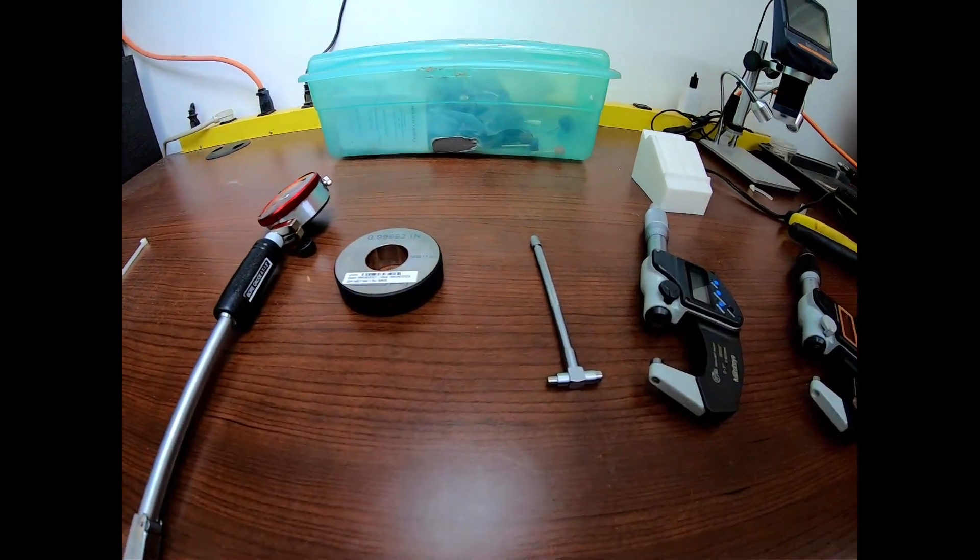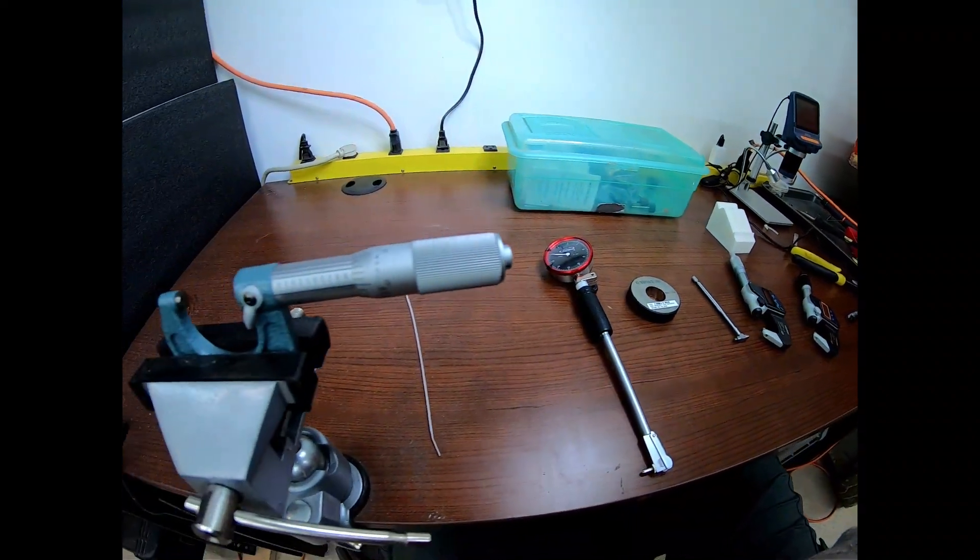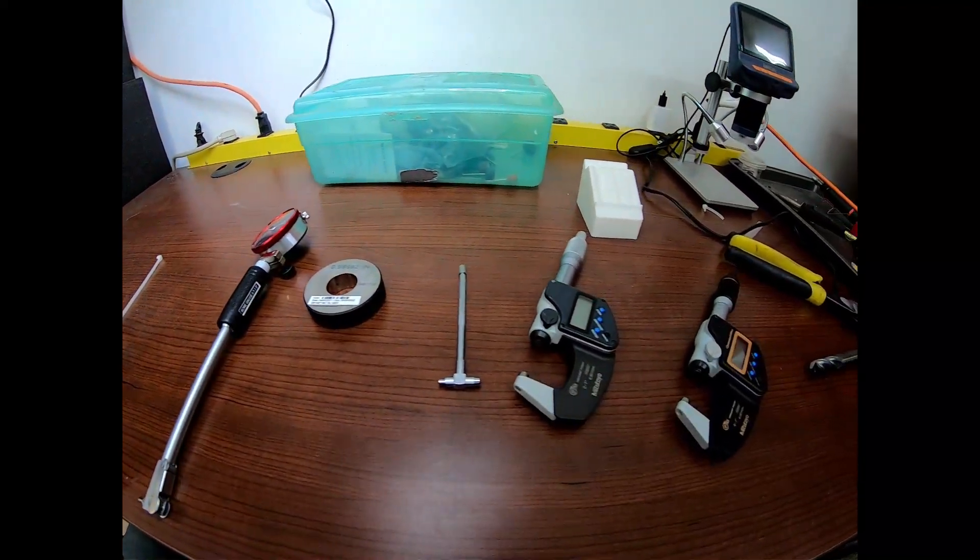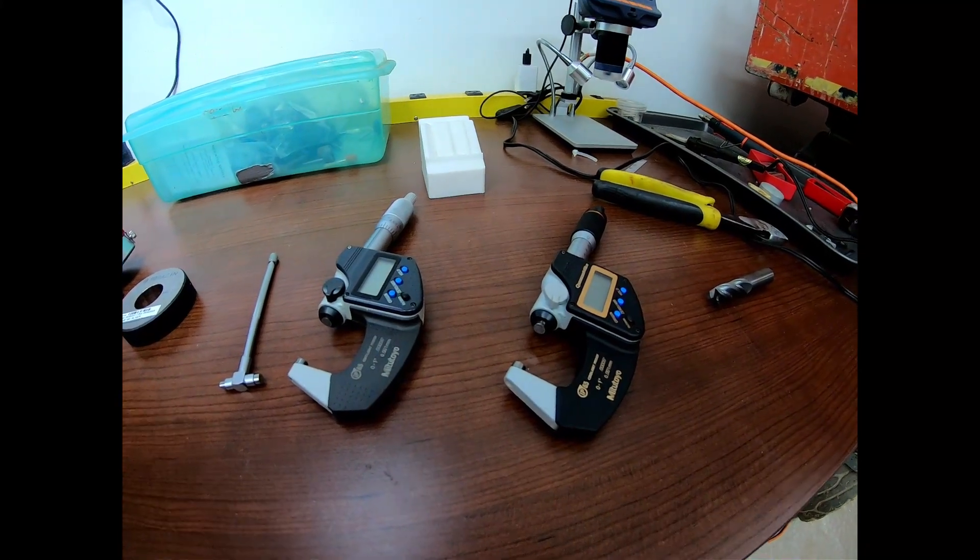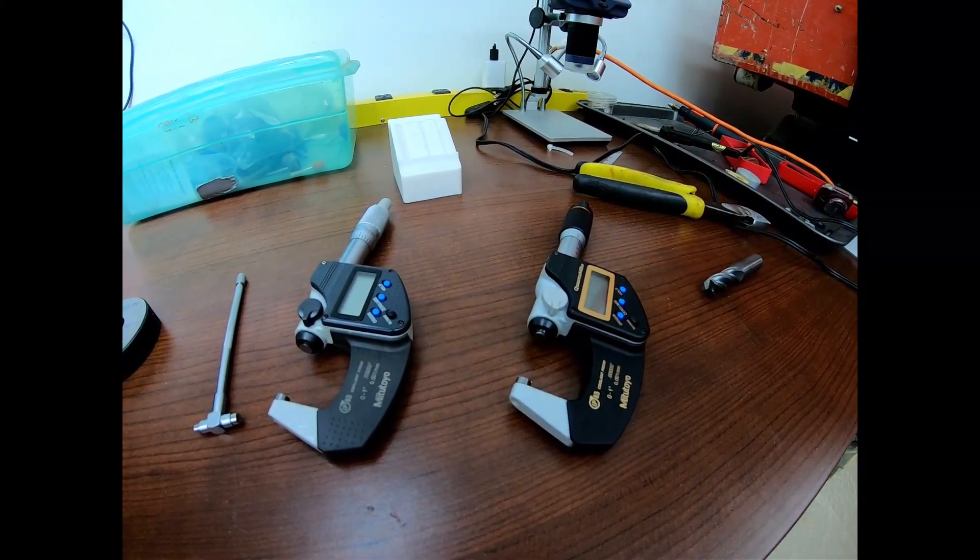I've taken a snap gauge, put it in the micrometer, and checked it back against these two, which have also been set up against a gauge block, and they're literally perfect, like within millionths.